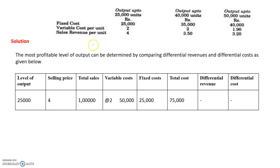Let us check the first level. In the first case, the total output to be produced is 25,000 units. If you are producing 25,000 units and selling at 4 rupees per unit, the total sales revenue will be 1 lakh rupees. Variable cost is 2 rupees per unit, so 25,000 into 2 is 50,000. Fixed cost is 25,000. Total cost is variable cost plus fixed cost: 50,000 plus 25,000 equals 75,000.